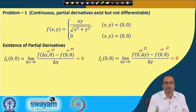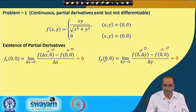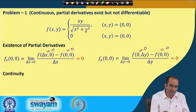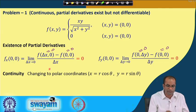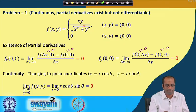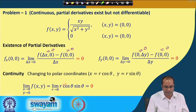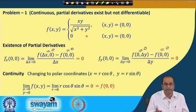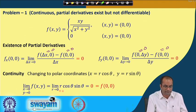For continuity, we change to polar coordinates: x = r·cosθ, y = r·sinθ. Substituting, we get r·cosθ·sinθ as r → 0, since cosθ and sinθ are bounded. This limit goes to 0, which equals the function value f(0,0) = 0. Therefore the function is continuous at the origin.